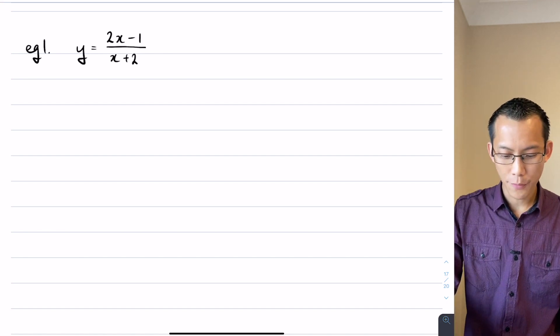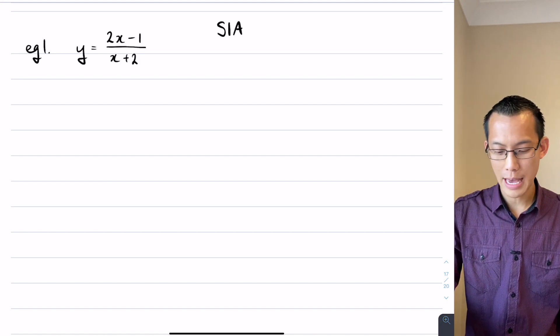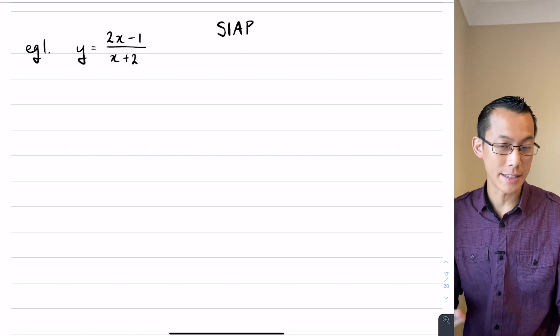So remember I said before we're looking for shape, intercepts I should say if appropriate, asymptotes, and also a point for scale if it's needed.